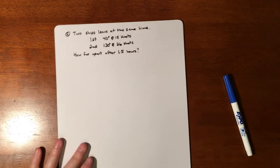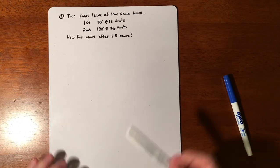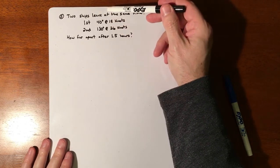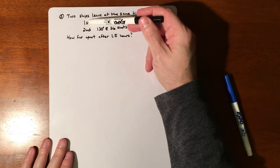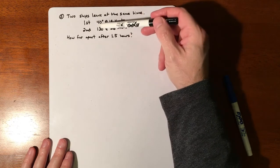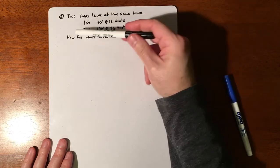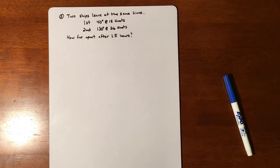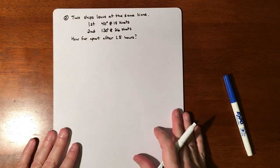Let's do another type of word problem. This one is two ships leaving the same port at the same time. The first has a bearing of 40 degrees heading at 18 knots, and the second has 130 degree bearing traveling at 26 knots. How far apart are they in an hour and a half?